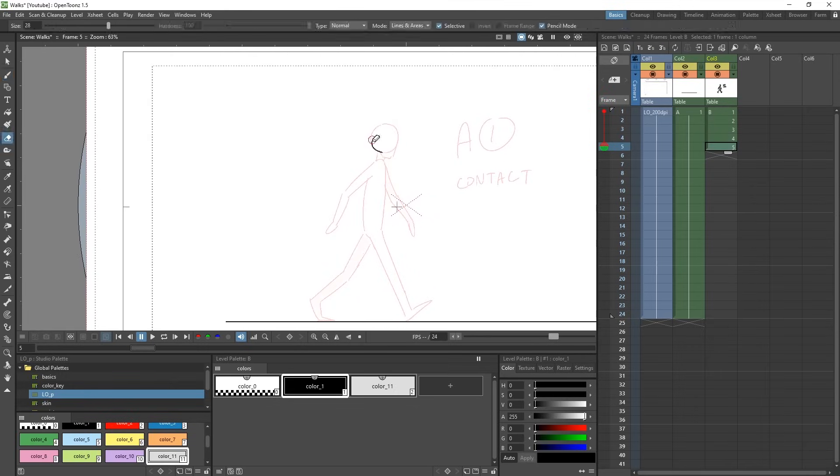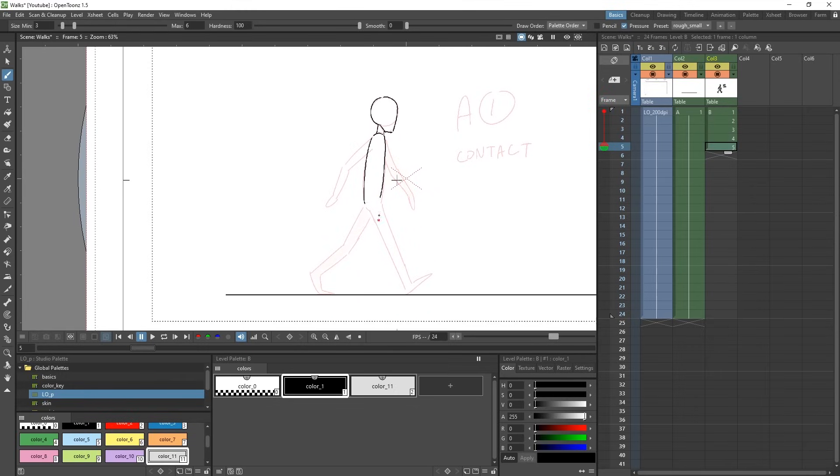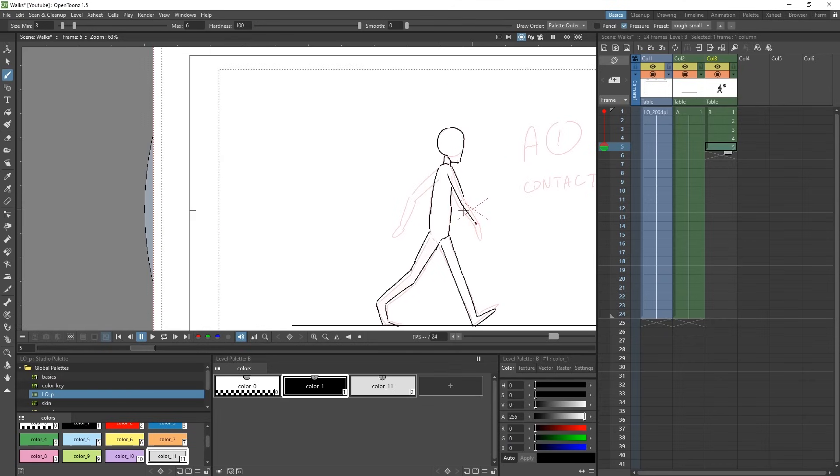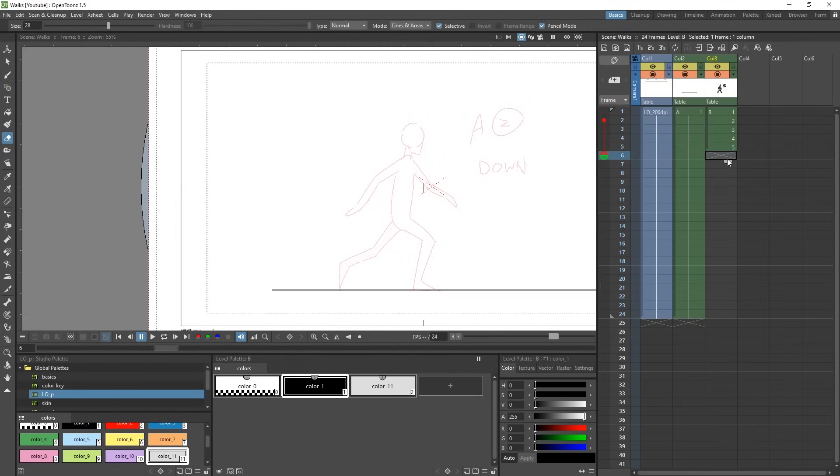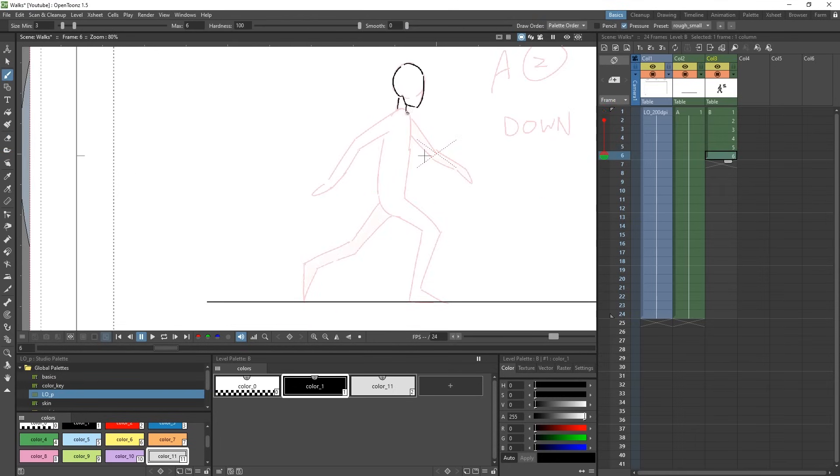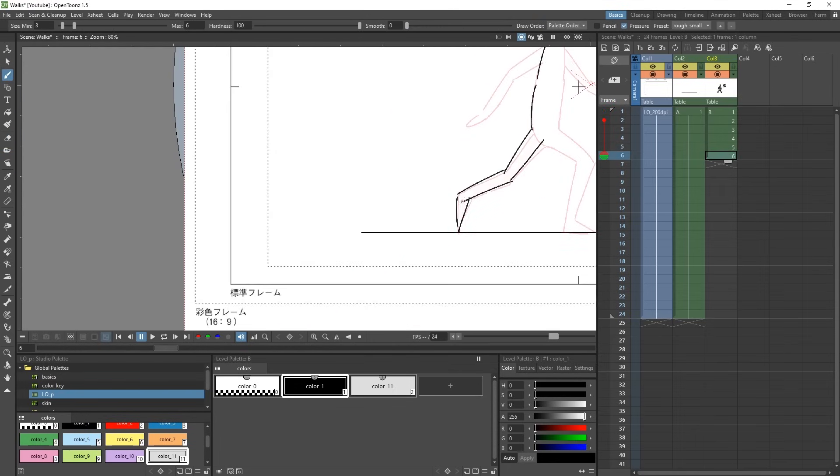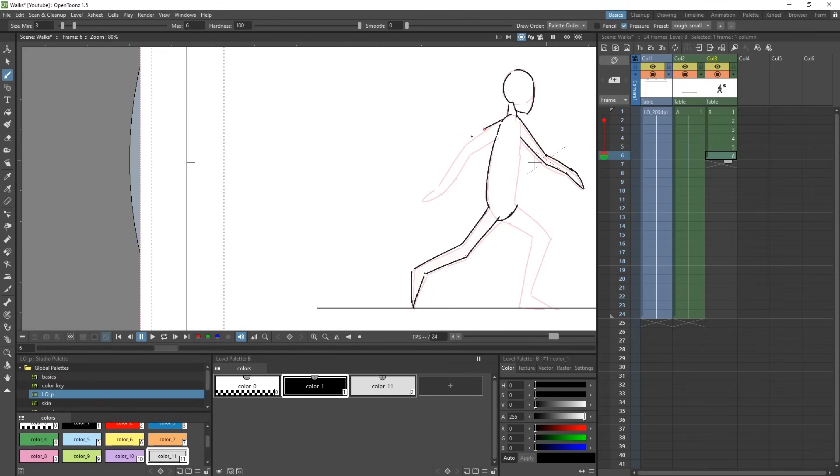And lastly, we return to the contact pose, but with the legs and arms in opposite positions from our beginning contact pose. Turn on your onion skin for this as it helps a lot. We now would just redraw the other poses again, but with the arms and legs switched. Again, onion skin helps here a lot.